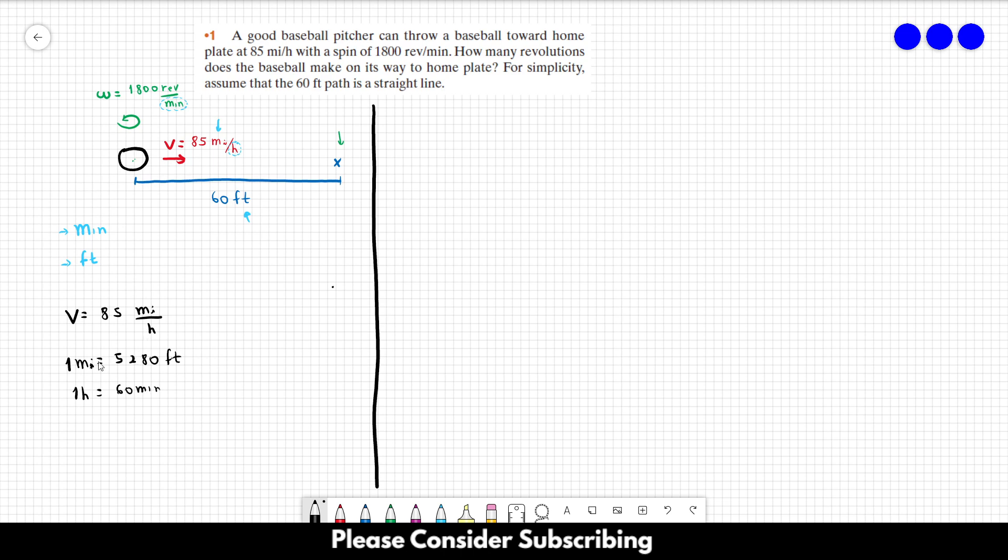Okay, so we can just replace this over here and then we are going to get 85 times 5,280 feet over 60 minutes. So we just replaced miles per 5,280 feet and one hour per 60 minutes and then we find 7,480 feet per minute.